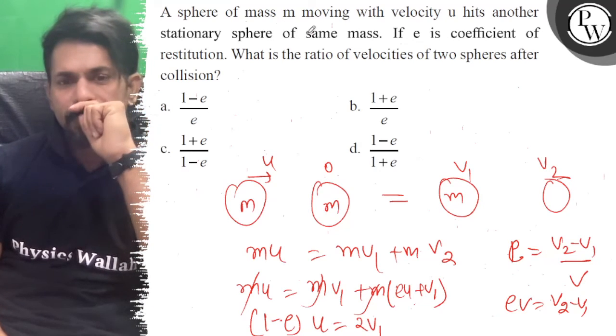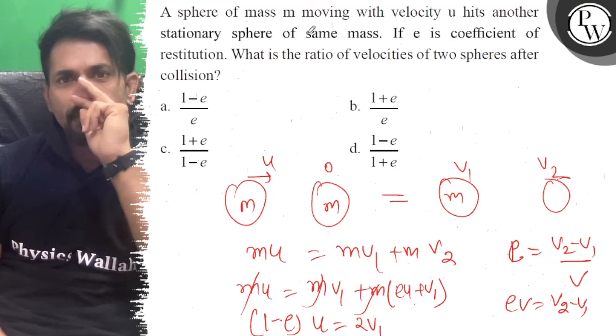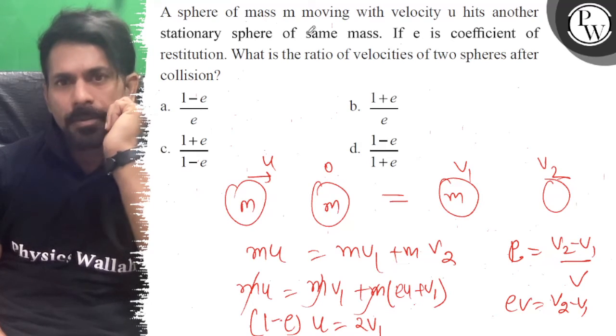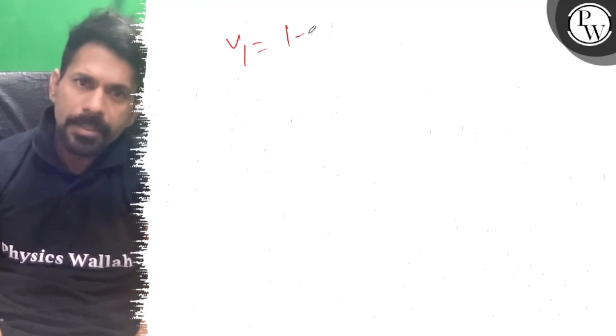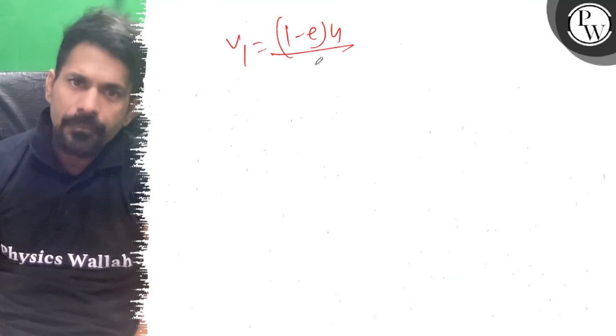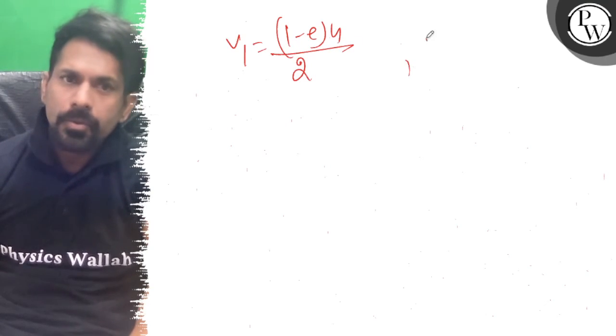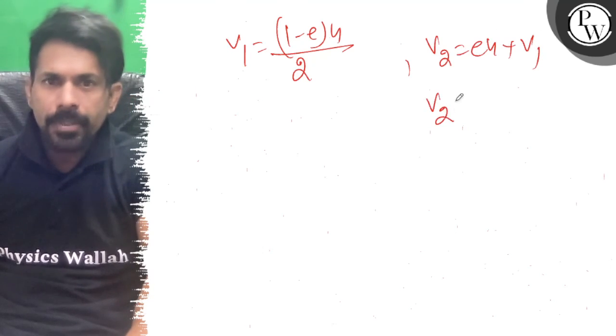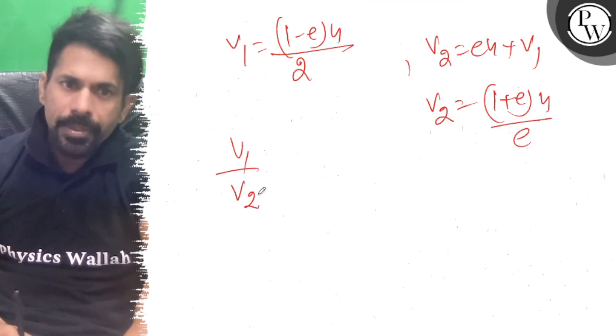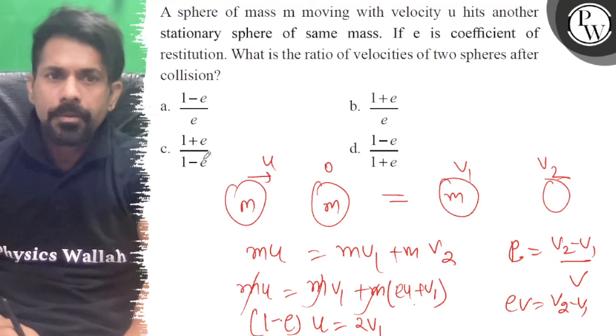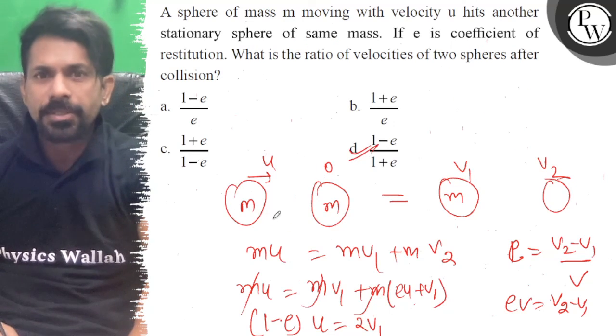So v1 equals (1 minus e) u by 2, and v2 equals (1 plus e) u by 2. Therefore, the ratio of velocities v1 upon v2 equals (1 minus e) upon (1 plus e). Option d is correct. All the best.